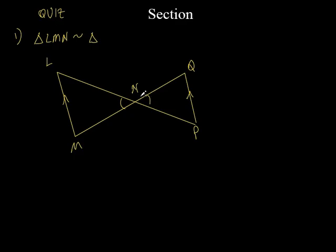Everybody sees that, don't they? What else do you see? I've got parallel lines — parallel lines cut by a transversal. So look at this angle right here. This angle right here is going to equal this one down here because of alternate interior angles. And so that means that this one, of course, is going to go with this one. Alternate interior angles, plus it's the third angle — they've got to be equal to each other.